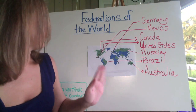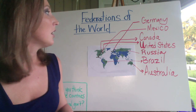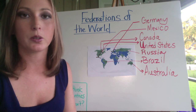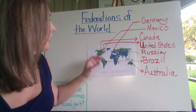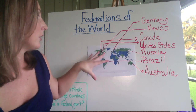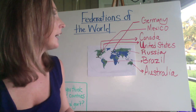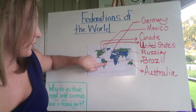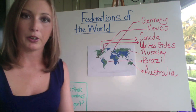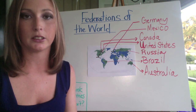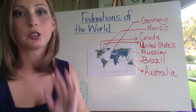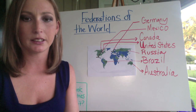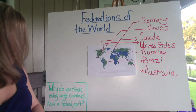There are different federations in the world, and we'll look at a few as we continue through the semester. On the map, you'll notice that most countries in the world are not federations — most are unitary forms of government, shown in blue. Federations are shown in green. Some federal governments we'll examine more closely include Germany, Mexico, Canada, the United States, Russia, Brazil, and Australia. We'll look at how these countries distribute power and how their governments work. Also, jot down in your notebooks: why do you think many large countries have a federal government?